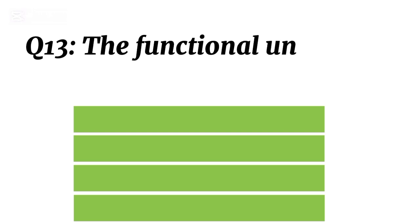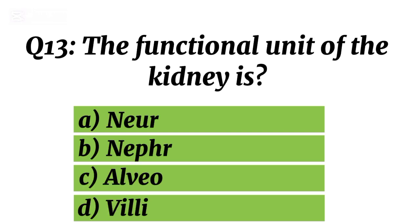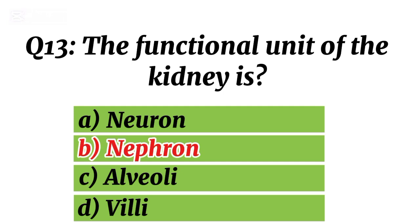Question 13. The functional unit of the kidney is? Correct option B. Nephron.